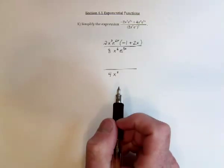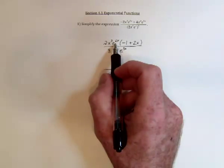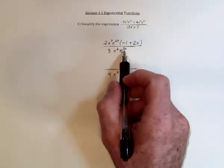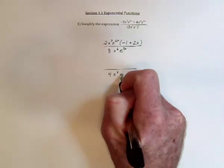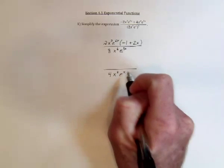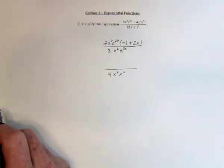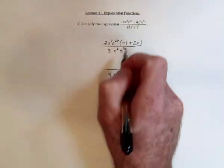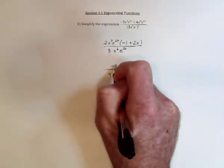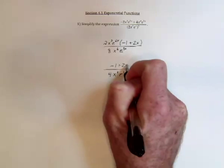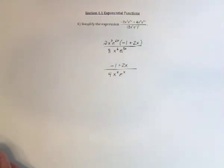As far as e to the x, there's 2x of them there and 3x of them there. So that's going to leave 1x of them, or just x, in the denominator. And this expression, negative 1 plus 2x, is left in the numerator. And nothing else can be reduced or cancelled.